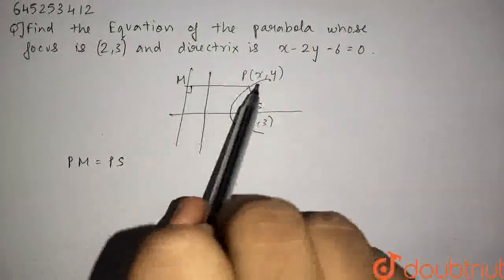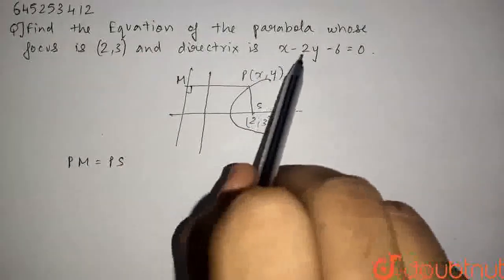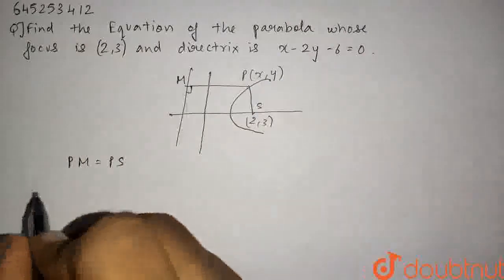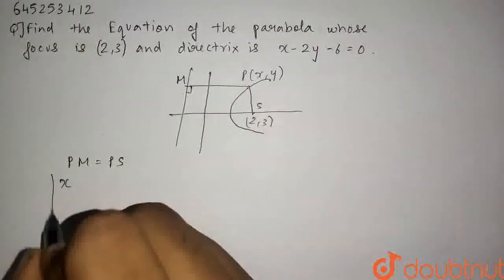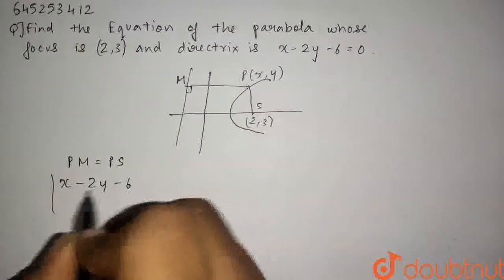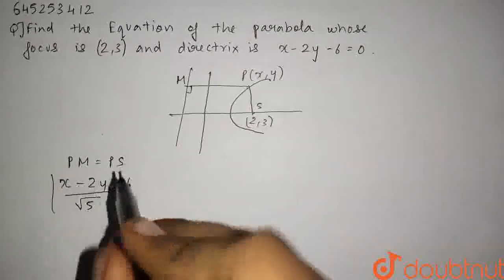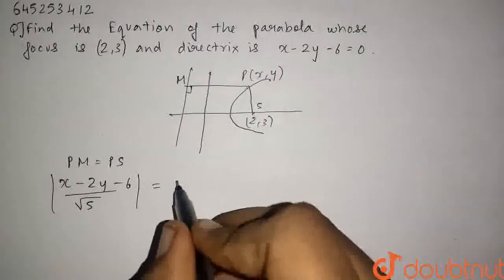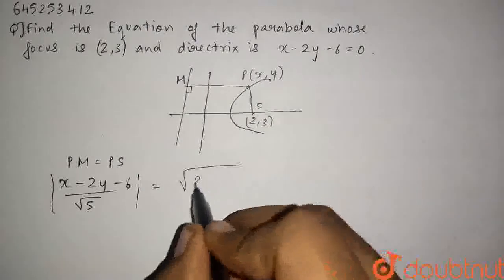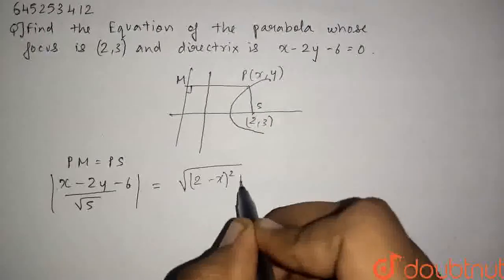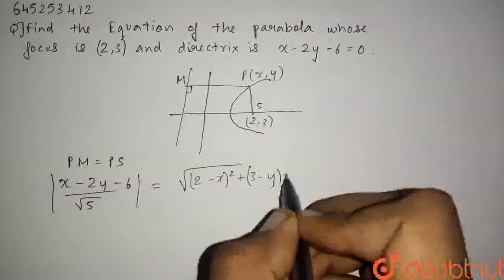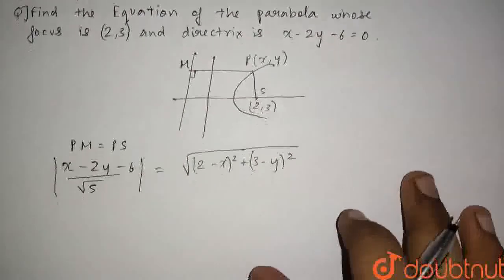We have to find the perpendicular distance of this point (x,y) to the line x-2y-6=0. Just substituting it, we will get (x-2y-6)/√5. How root 5? Root of 1² plus 2². This equals PS. Using the distance formula, we calculate PS as √[(2-x)² + (3-y)²]. This is the value.